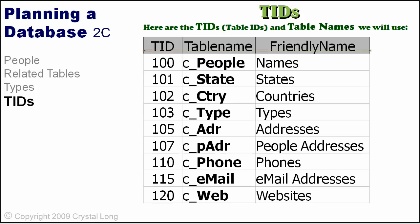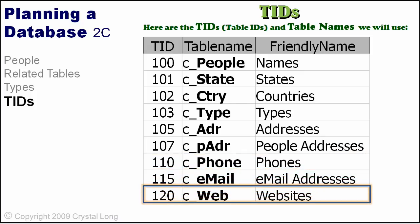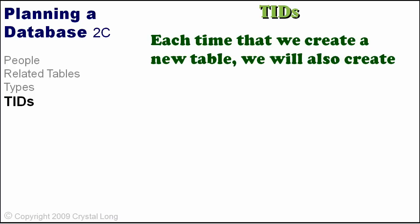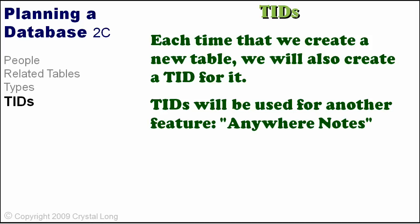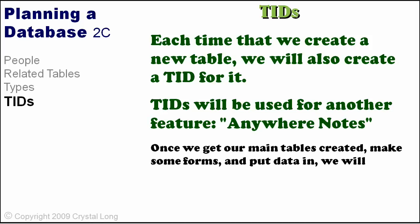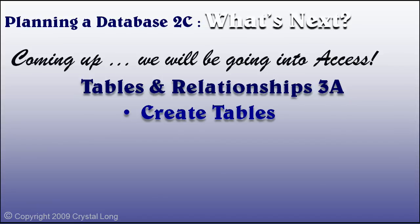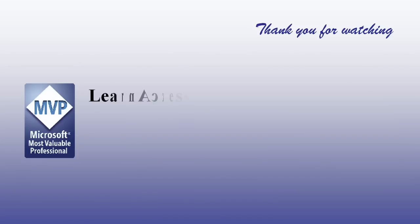Here are the TIDs we will use for each table: 100 for people, 105 for addresses, 110 for phones, 115 for email addresses, and 120 for websites. Each time we create a table, we will also create a TID for it. TIDs will also be used for another feature — Anywhere Notes. Once we get our main tables created, make some forms, and put some data in, we will discuss and set up Anywhere Notes. What's next? We will be going into Access to create tables, define fields and properties, drag relationships, and make sample records.